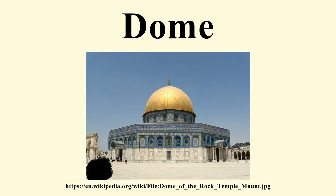The symbolism associated with domes includes mortuary, celestial, and governmental traditions that have likewise developed over time. Domes have been found from early Mesopotamia, which may explain the form's spread. They are found in Persian, Hellenistic, Roman, and Chinese architecture in the ancient world, as well as among a number of contemporary indigenous building traditions.